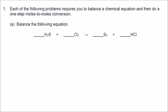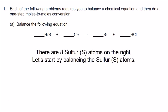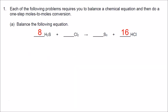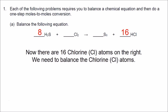Part A: balance the following equation. There are eight sulfur atoms on the right, so let's start by balancing the sulfur atoms. We put an 8 in front of H2S. Now there are 16 hydrogen atoms on the left, so we put a 16 in front of HCl on the right. Now there are 16 chlorine atoms on the right, so we put an 8 in front of Cl2 on the left. The equation is balanced.